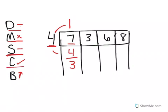Now I check. My 3 is less than 4. Now I bring up my number. Now I want to think — I have 33. 33 divided by 4. What number times 4 is close to 33 without going over?